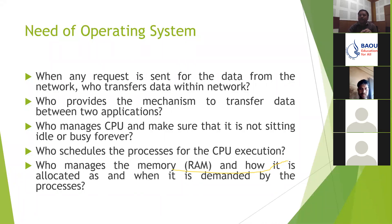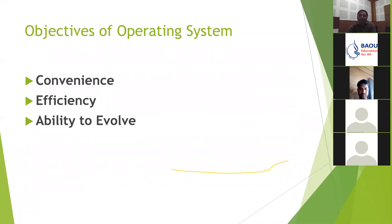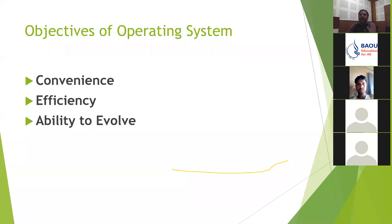Now, what are the objectives of the operating system? There are three main objectives. The first is convenience or user friendliness. Second is efficiency — more work in less time. And third is ability to evolve. For example, we are now using Windows 10, but it started with Windows 1 in 1985. Gradually from Windows 1 to Windows 10, the operating system kept upgrading without creating problems for the previous version. This is called ability to evolve.